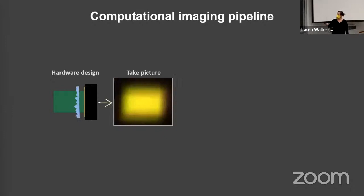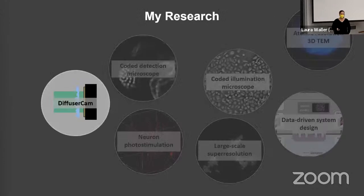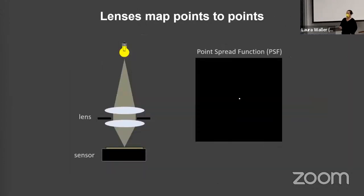This project we call DiffuserCam because we put a diffuser in front of this sensor. By diffuser, I just mean a bumpy piece of plastic. We sometimes use scotch tape or the stickers that you put on your windows so your neighbors can't see in. You put this over the cover glass of the sensor, just a few millimeters away. Now I take an image that also looks like garbage, but now it's structured garbage. And I can reconstruct the scene from this image.